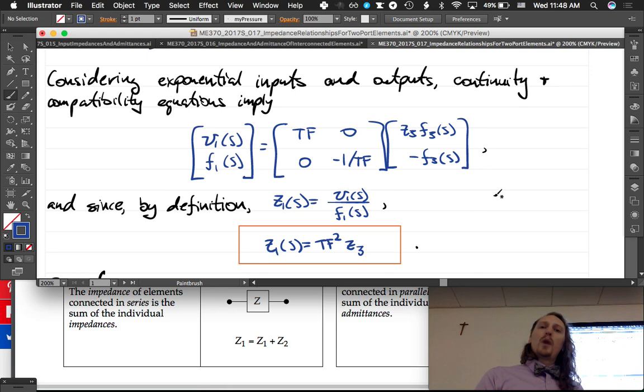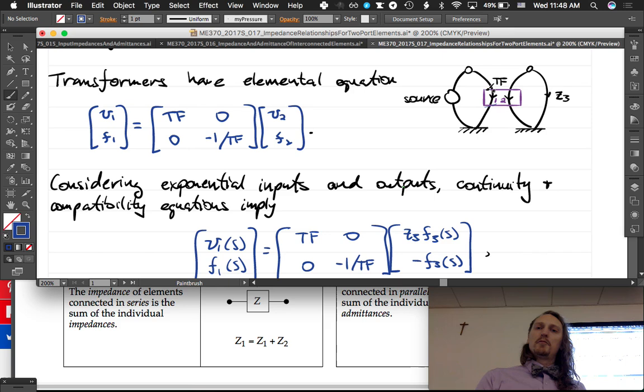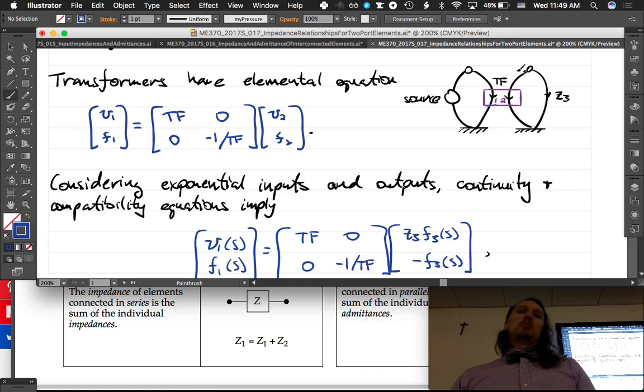So let's take this result and let's look back at this figure. We're saying that the impedance that's felt at this element here, across this element connected to the source, is z3, the same as on this side of the transformer, times the transformer ratio squared.